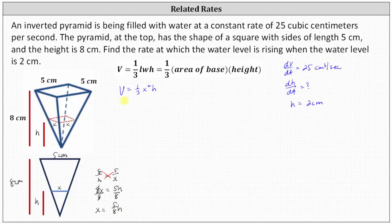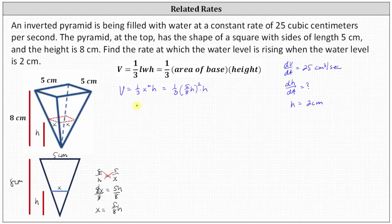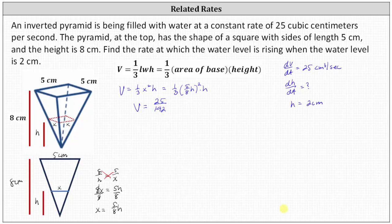Now we can perform a substitution into the volume formula. The volume v equals one third times x squared, and the square of x is the same as the square of five eighths h, times h. The square of five eighths is twenty-five sixty-fourths, and one third times twenty-five sixty-fourths gives us twenty-five divided by one hundred ninety-two. Then h squared times h gives us h cubed, so v equals twenty-five over one hundred ninety-two times h cubed.